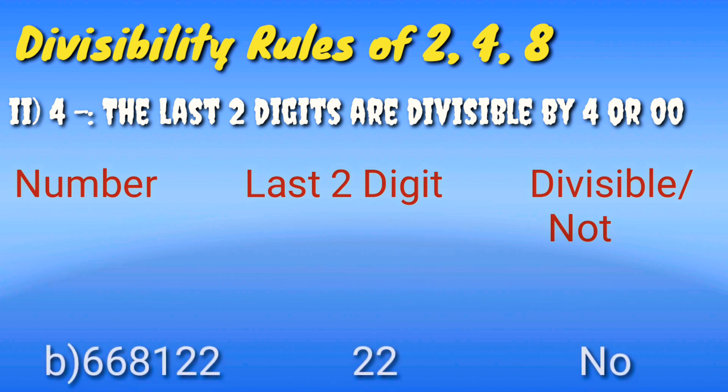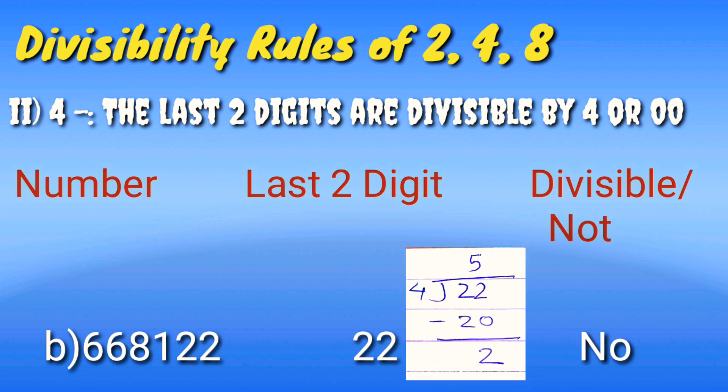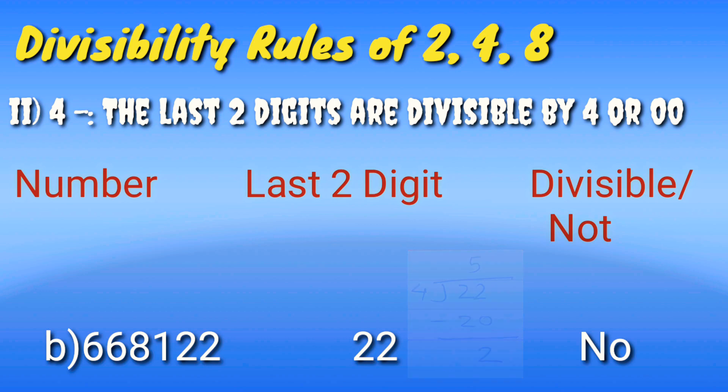Another example is 6,68,122. The last two digits are 22. 22 is not divisible by 4, so the whole number is not divisible by 4.